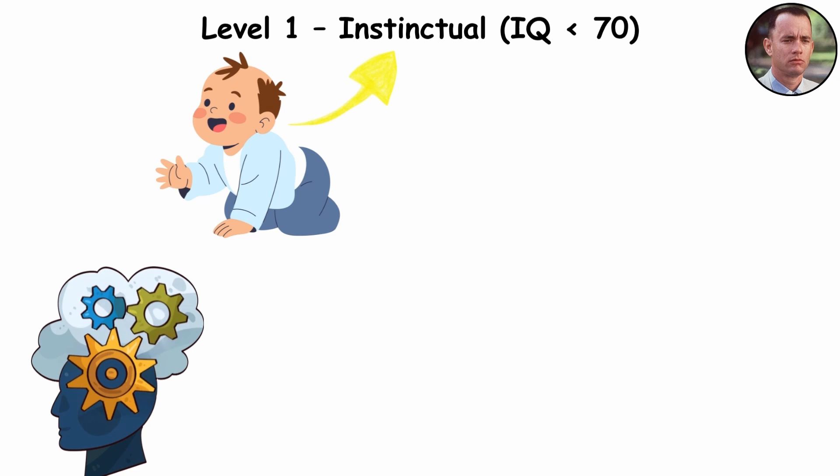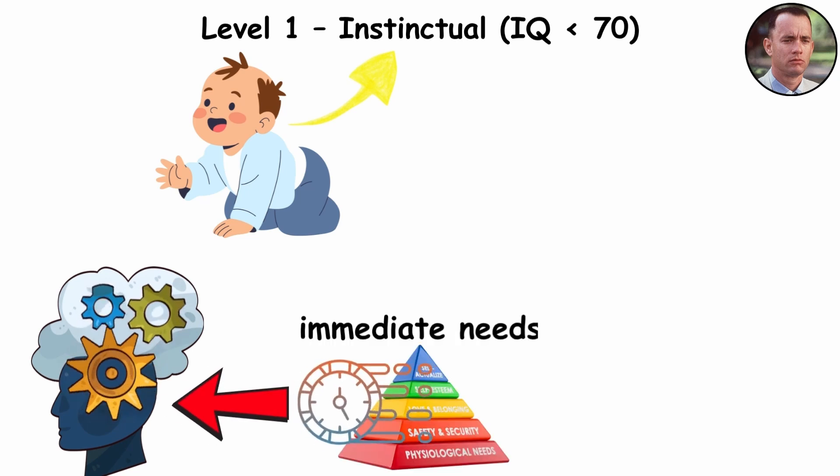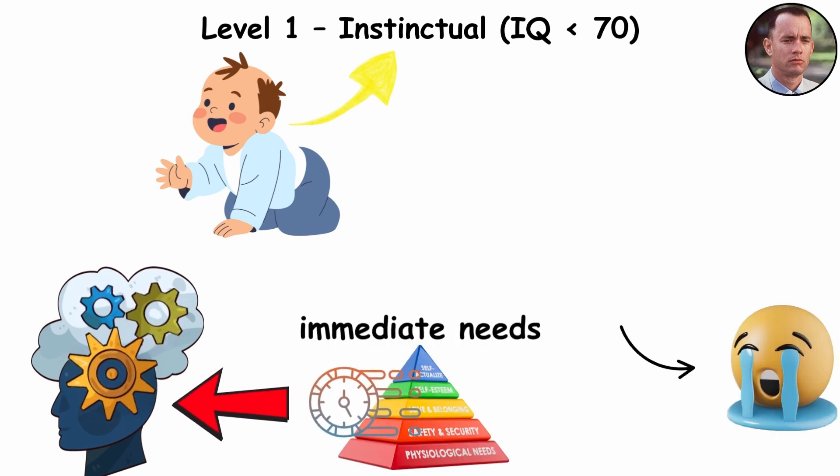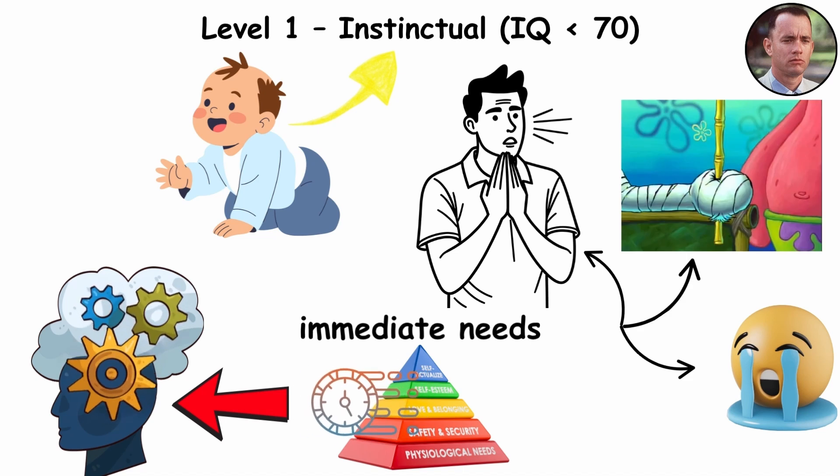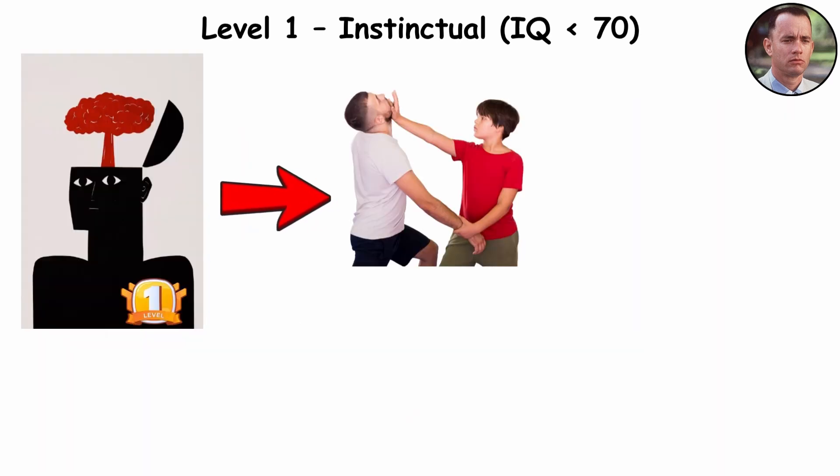The mind here is a reflex machine, powered by immediate needs. Every reaction, a cry, a flinch, a grasp, is the brain's first version of fight or flight.